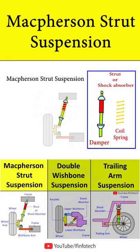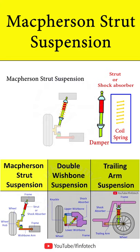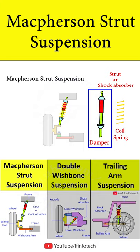The purpose of the coil spring is to store energy from shudder coming from the road surface. This stored energy is then dissipated in the form of heat with the help of the damper, which uses hydraulic fluid.